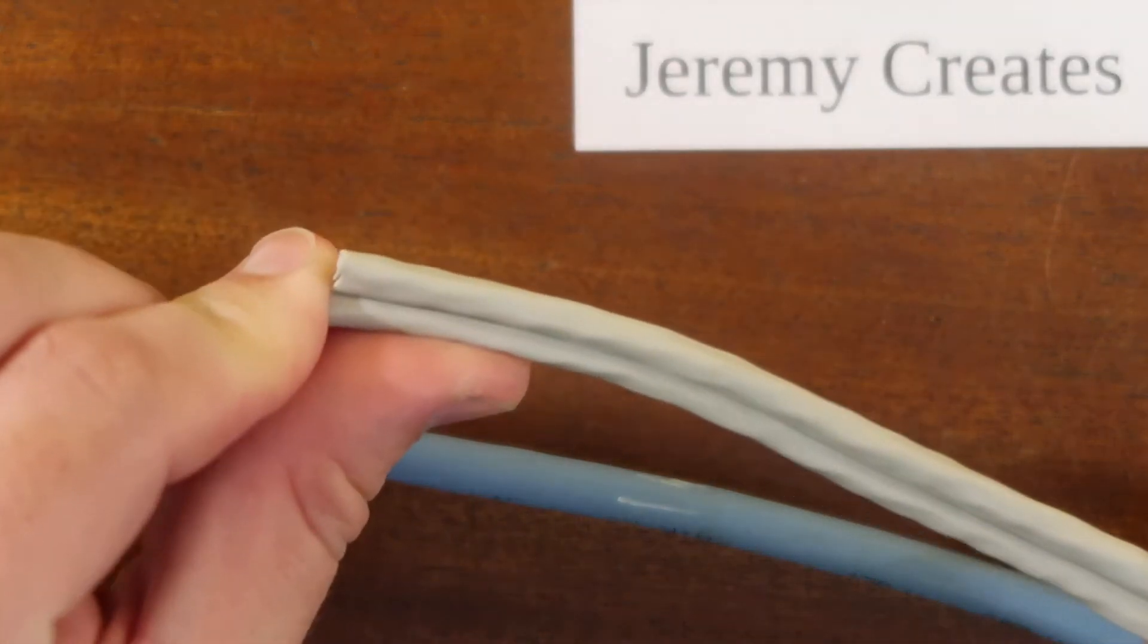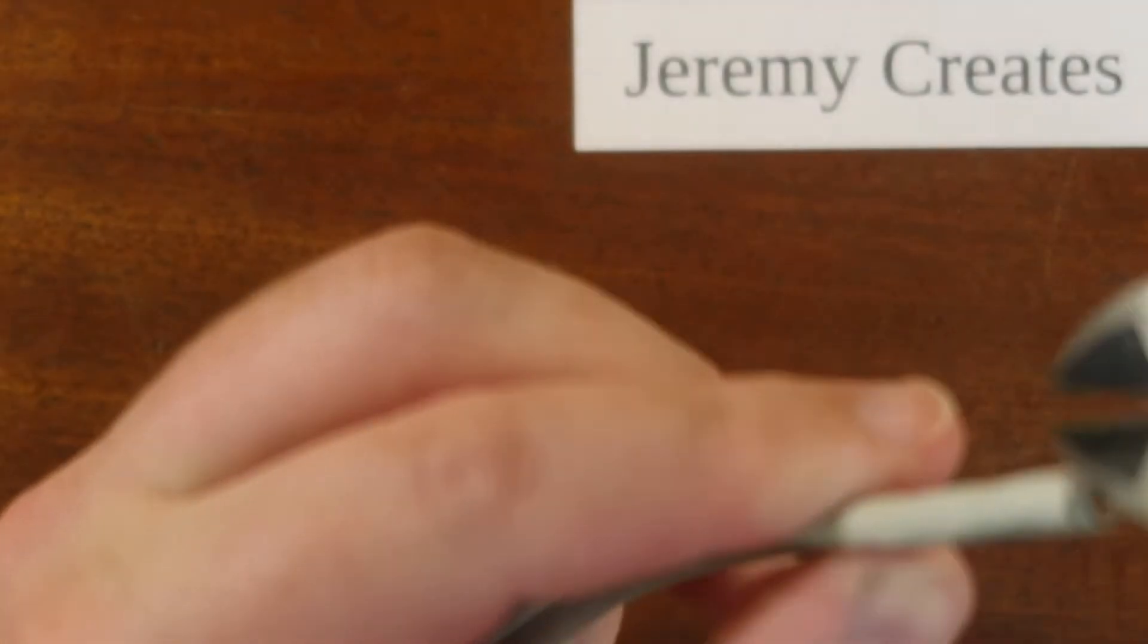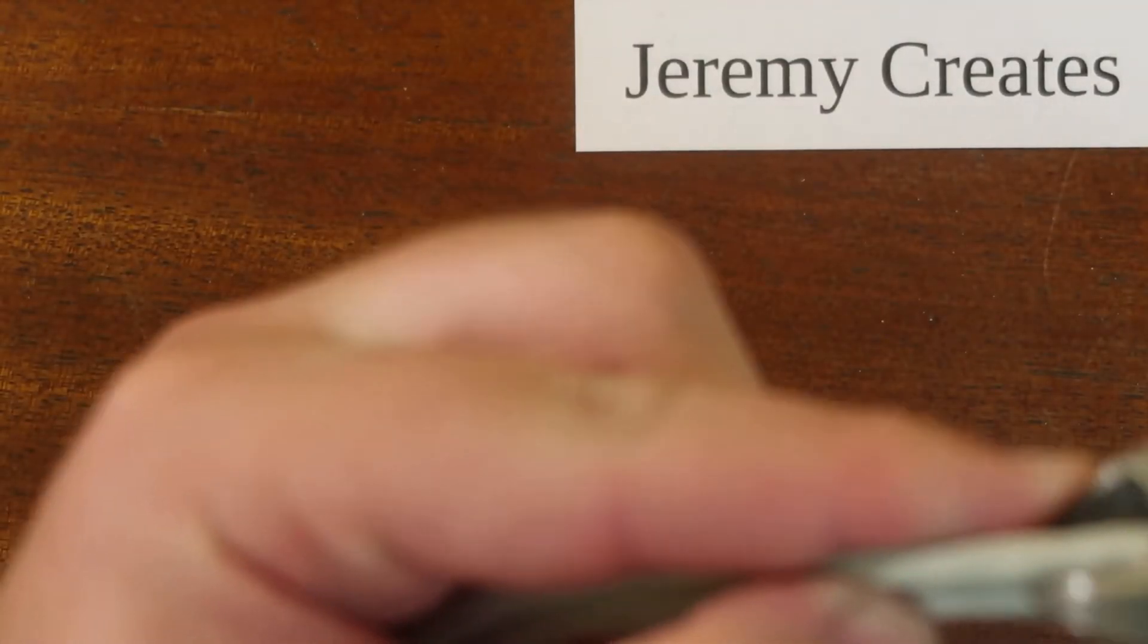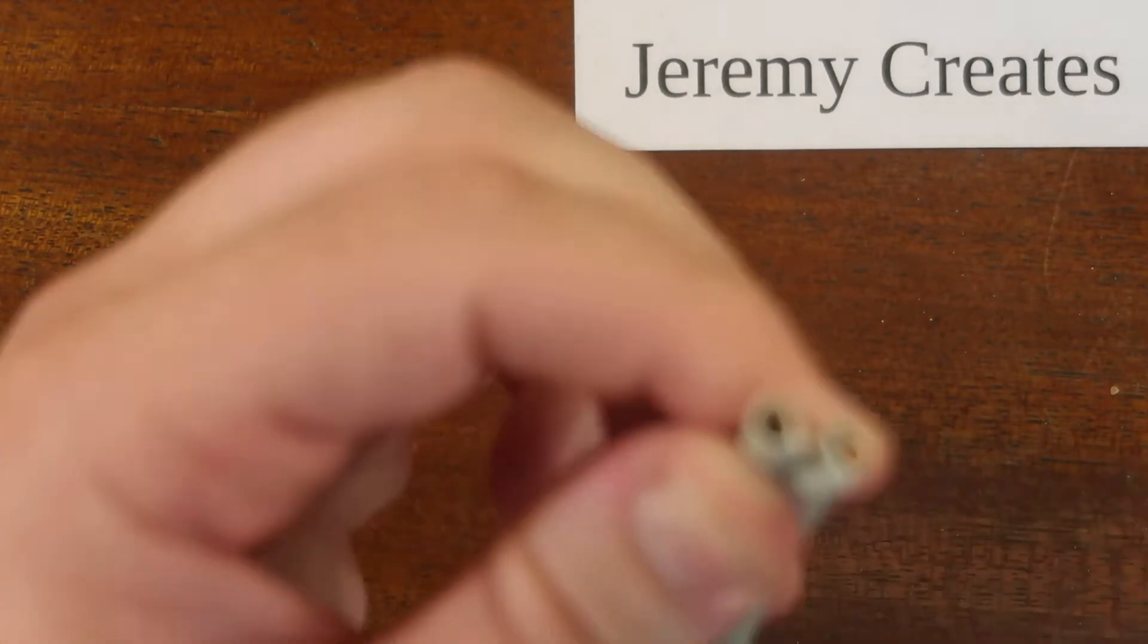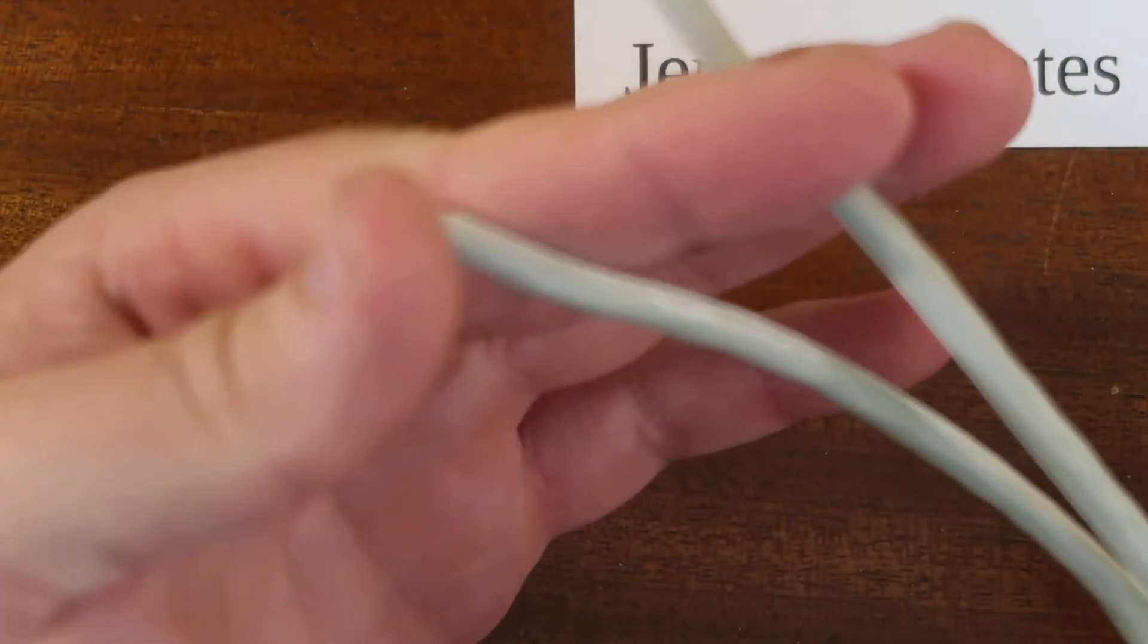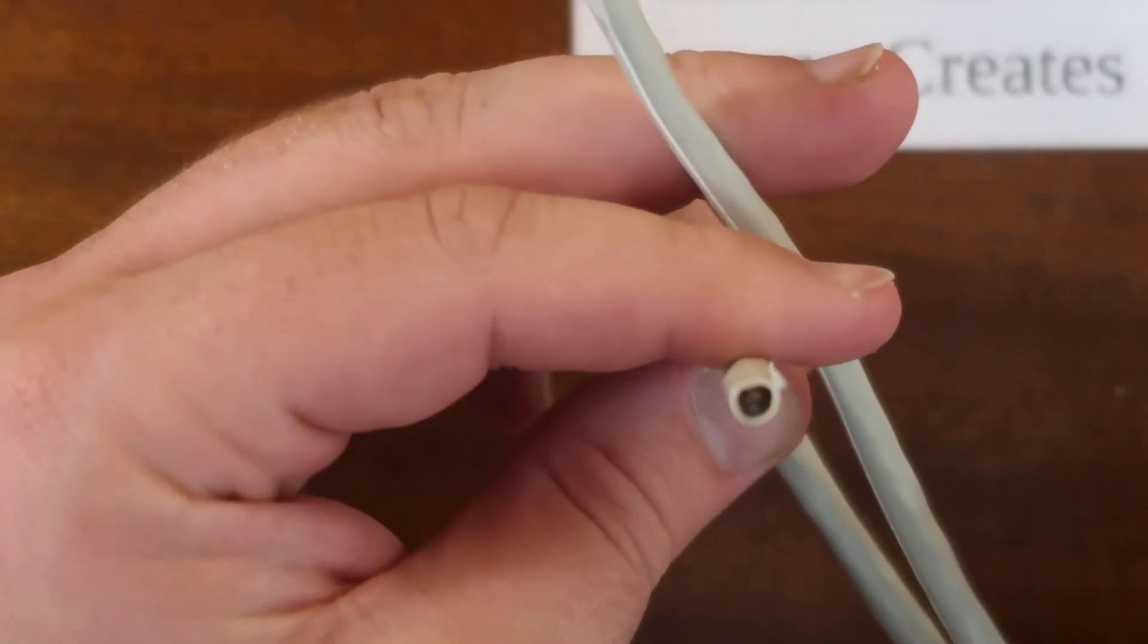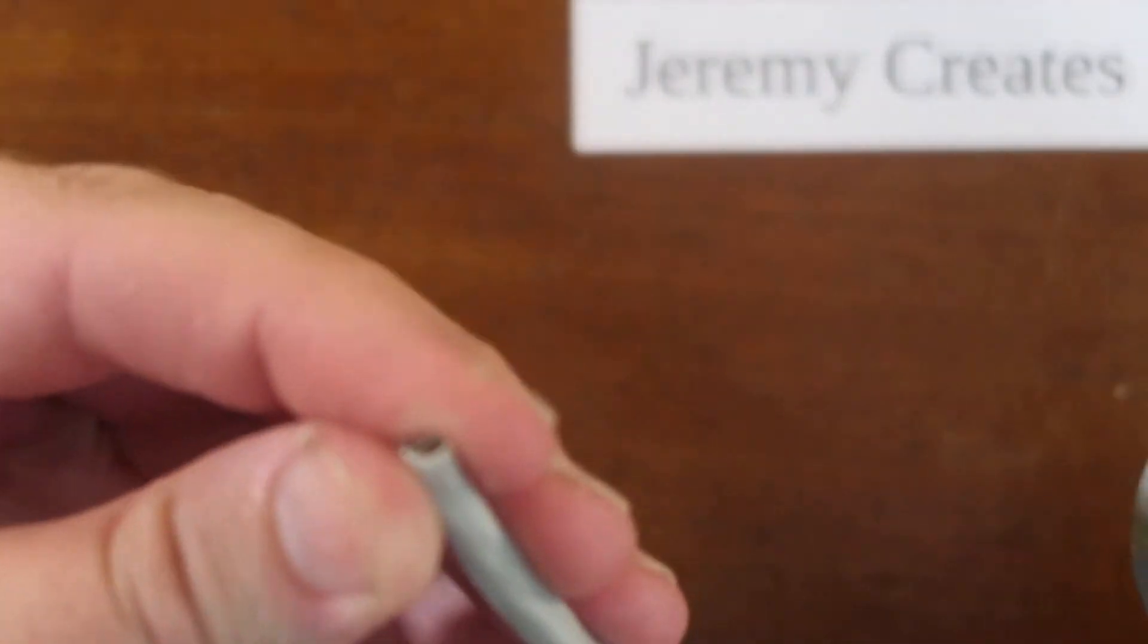One of them is a shotgun Cat5e cable. That means that it's two Cat5e cables stuck together. That means that you don't have to run as many runs of cable from your network switch to where you want your points, your network points on the wall.